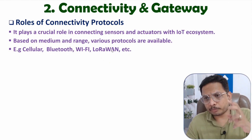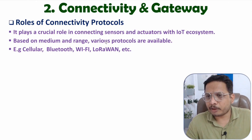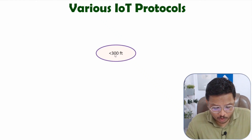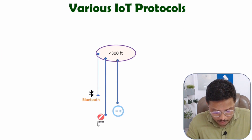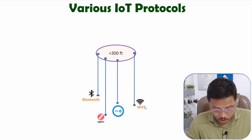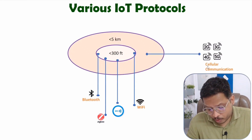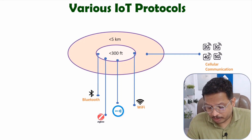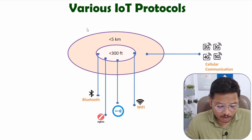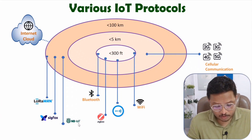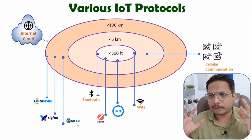For distances less than 300 feet, we can use Bluetooth, ZigBee, NFC, and Wi-Fi. If the connectivity range is up to 5 kilometers, we can use cellular communication protocols — 2G, 3G, 4G, and 5G. For distances lower than 100 kilometers, data remains on the internet cloud, and here we have protocols like LoRaWAN, Sigfox, and NB-IoT. So there are different types of protocols available based on range.